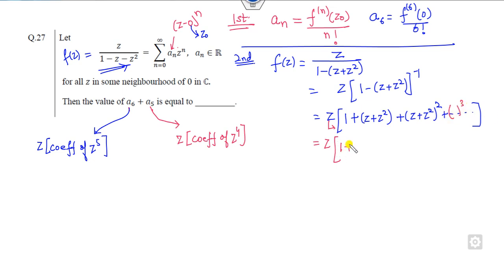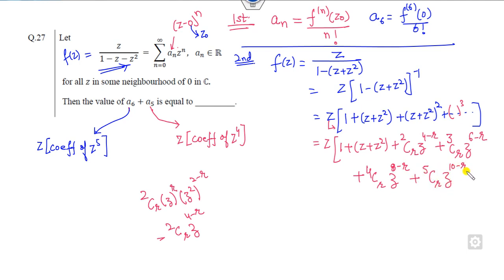Because it's sometimes as a cube, sometimes as 4, I can write in the general form. Now, how you can open this and write in a series form? That is a binomial series. 2CR Z raised to power R, Z square raised to power 2 minus R. So what is that? 2CR Z raised to power 4 minus R. Similarly, for the cube part, it will be 3CR Z raised to power 6 minus R, 4CR Z raised to power 8 minus R, 5CR Z raised to power 10 minus R and so on.